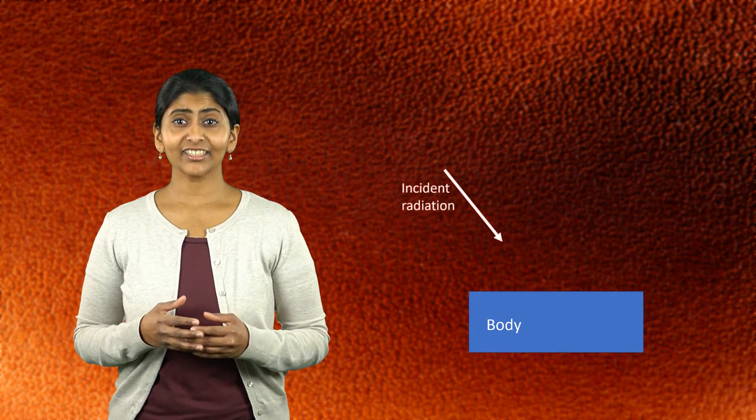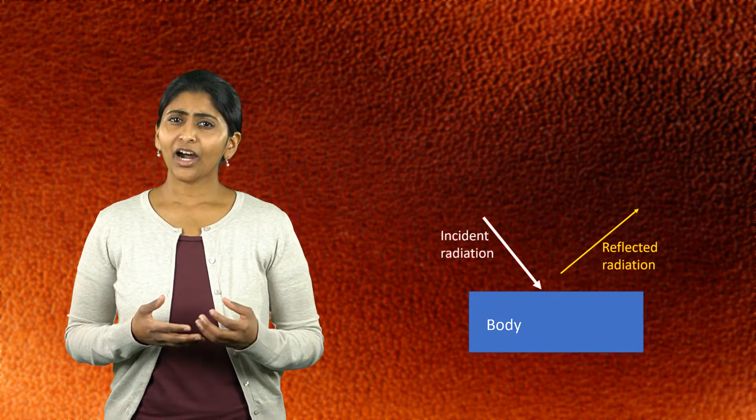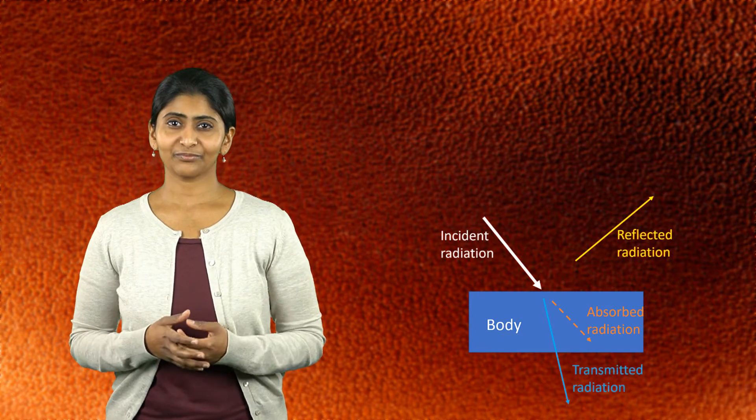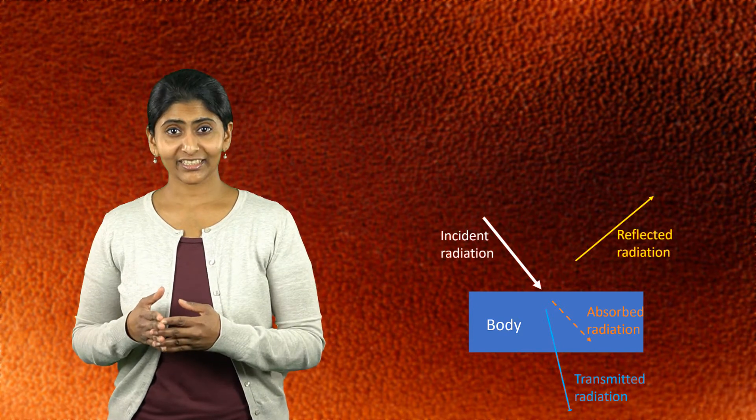Now, let's look at how different bodies or materials behave when subjected to incident thermal radiation. When a certain amount of thermal radiation is incident on a surface, part of it will be reflected, part of it will be absorbed, and the rest of it may be transmitted through the body.